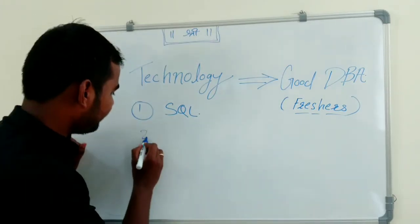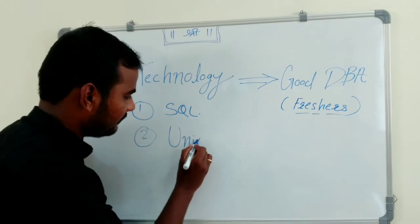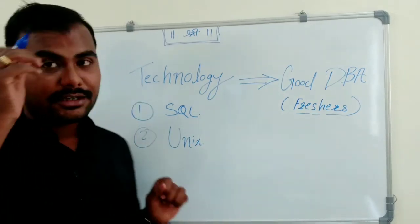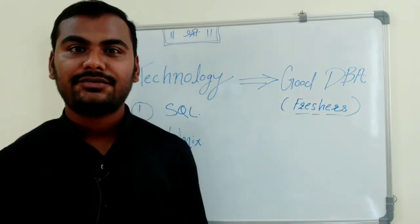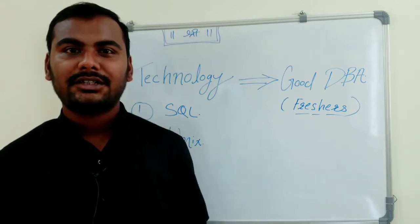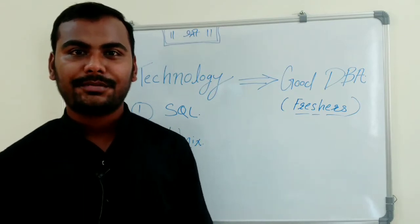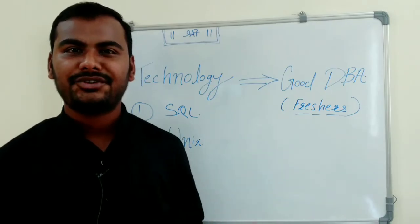If you want to become a DBA, most of your Oracle databases will be on top of UNIX operating system. UNIX and Windows are two different operating systems. In Windows you'll find most things can be done with the help of GUI only.